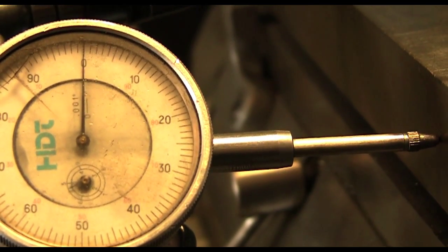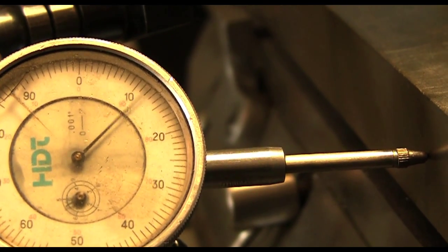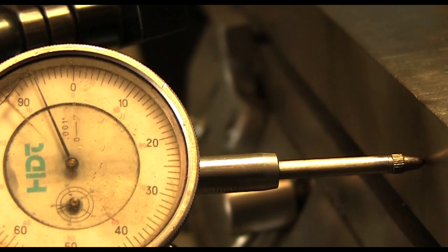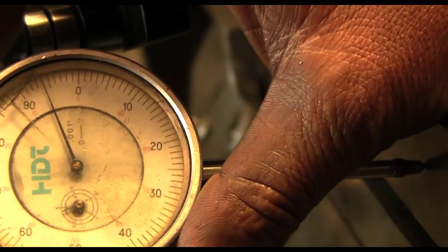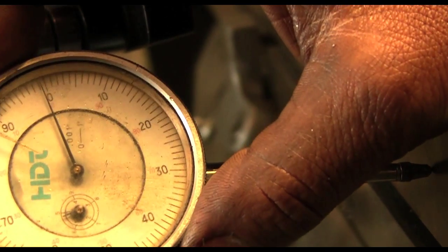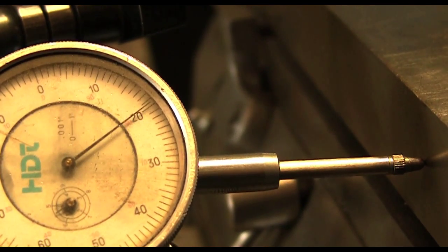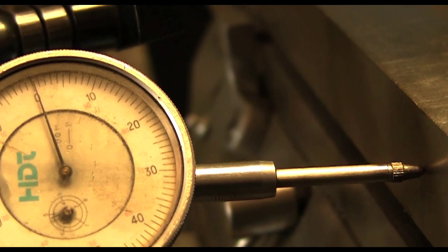Once your dial is firmly secured, set the initial dial reading to zero. This is to get a more accurate reading for min-max needle changes and will allow you to reset it to zero once again once you've found the highest point. That will help form the basis for your reading and for later gib adjustments.